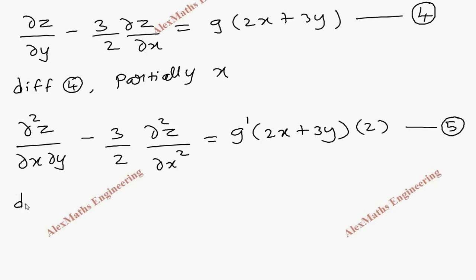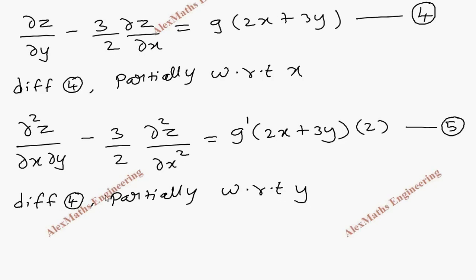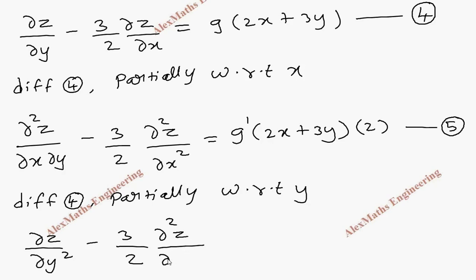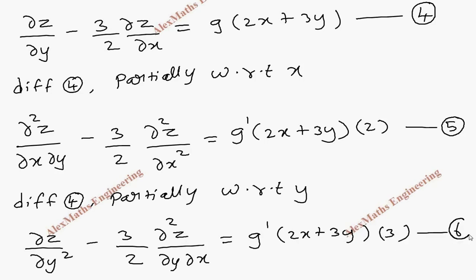In the same way we take the fourth expression again and differentiate it partially with respect to y. This becomes dou square z by dou y square minus 3/2 into dou square z by dou y dou x equal to g dash of (2x + 3y) into 3. This is our sixth expression.